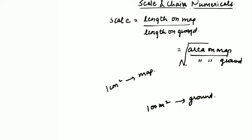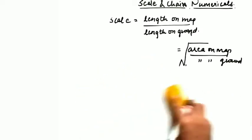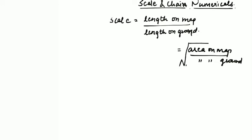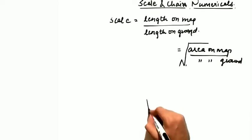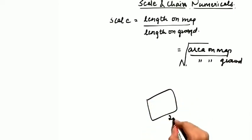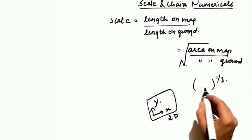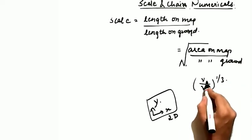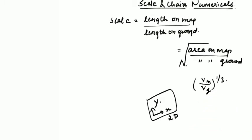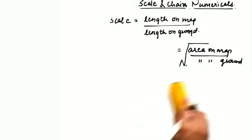If you ask whether scale can be represented in terms of volume — the answer is no. A piece of paper is a 2D object with only x and y axes; it cannot represent volumes. If it were possible, you would take the cube root (volume on map divided by volume on ground) to the power 1/3, but since it is not possible, we do not study this part.